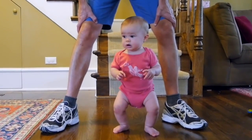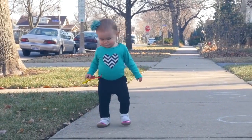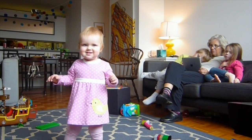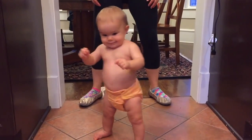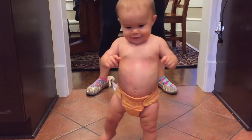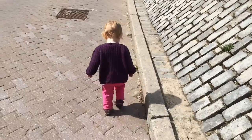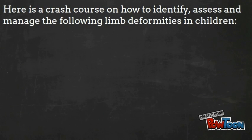Doctor, my child's legs look funny! Concerned parents often consult primary care doctors about deformities of their child's legs. These apparent deformities are usually a variation of normal growth. They range from physiological, which resolve with growth time, to pathological, which may need aggressive treatment. Limb deformities can be congenital or acquired. As future primary care doctors, it is essential that fifth-year medical students have an approach to these deformities. Here is a crash course on limb deformities in children.